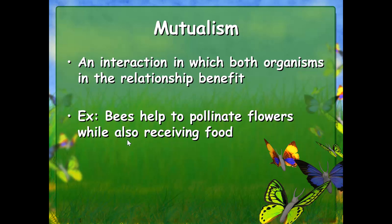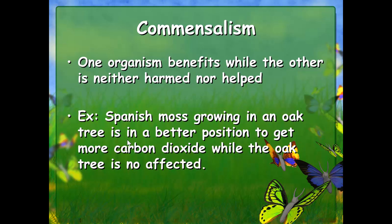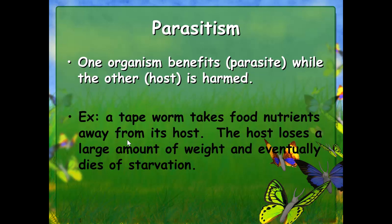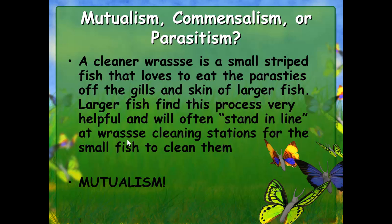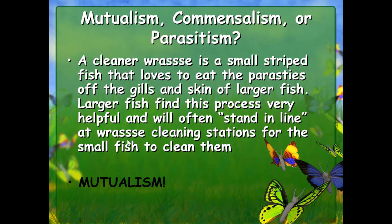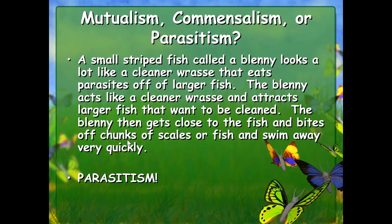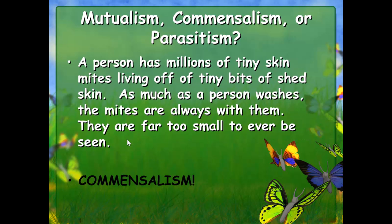Bees go from flower to flower eating the nectar, and pollen gets on their legs and bodies. They carry that pollen from plant to plant, helping the plants reproduce — so both the bee and the plant benefit. That's mutualism. In commensalism, one organism benefits while the other is neither harmed nor helped. In parasitism, one organism benefits while the other is harmed. Examples of each are shown, with answers provided at the bottom.